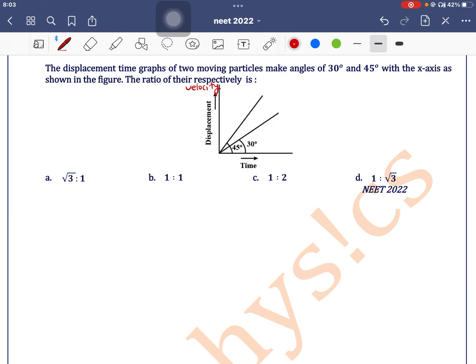See here, we know that velocity is written as velocity equals displacement upon time. And for this graph, the slope of the line is given as displacement by time, so velocity is equal to slope.